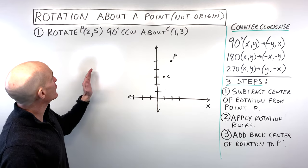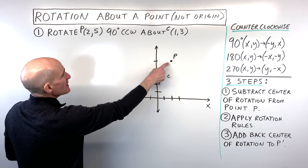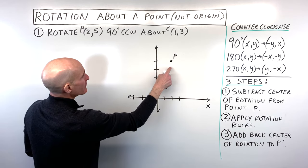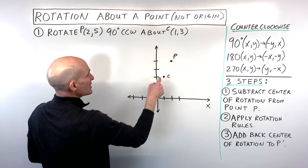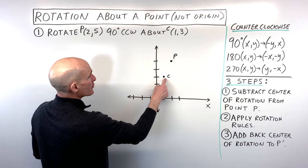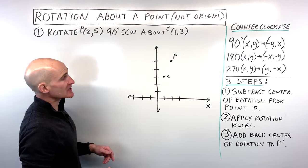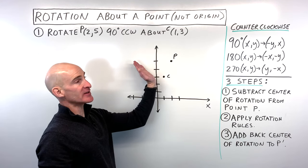For the first example we're rotating point P, which is at (2, 5), about the center of rotation (1, 3). We're rotating 90 degrees counterclockwise.